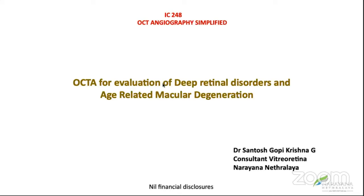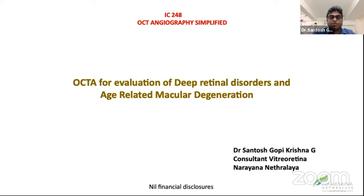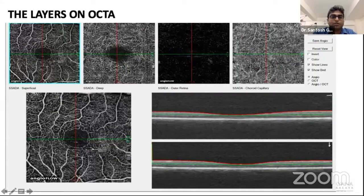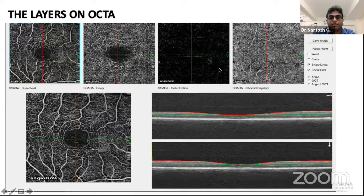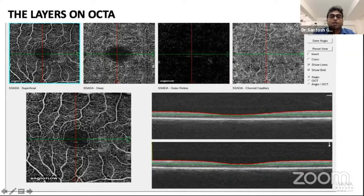So after Dr. Chetra's talk, I'll be talking more on the deep retinal vasculature as well as the choroidal circulation, especially regarding the CNVM and age-related macular degeneration. These are the layers which are important here, especially the deep retinal layers and even the outer retina, wherein we don't see vasculature that goes from the DCP towards the choroid or from the choroid towards the DCP. All these layers are especially important in deep retinal vasculature disorders.